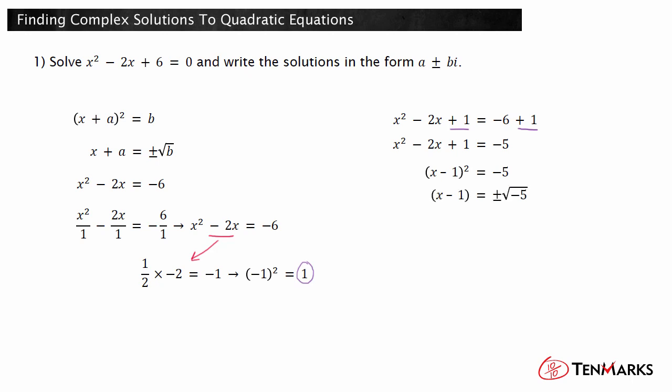The square root of negative 5 has to be written in terms of the imaginary number i. Since i equals the square root of negative 1, the square root of negative 5 is i times the square root of 5. Now you can find the two solutions by solving for x.